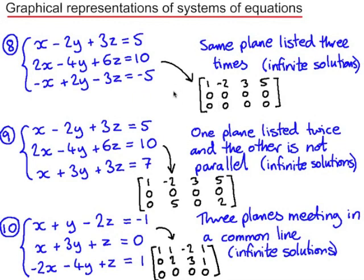Here's a summary of those three examples. With each question I've shown the matrix in row echelon form and commented on the graphical representation. In the first example, the matrix had two rows of zeros because it was the same plane listed three times — therefore infinite solutions. In the second example, one plane was listed twice, giving a row of zeros, and the third plane intersected the first along a line — again infinite solutions. In the third example, three planes met along a common line giving infinite solutions, and the row of zeros arises because the third plane intersects along that same line and adds nothing new to the solution.